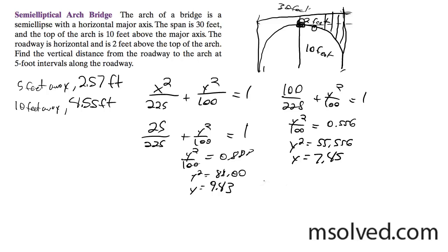And then finally, for 15 feet away, that one's pretty easy. It's just going to be 225 over 225, because it's 15 squared, plus y squared over 100 is equal to 1. Well, 1 minus 1 equals 0, so y squared over 100 equals 0.